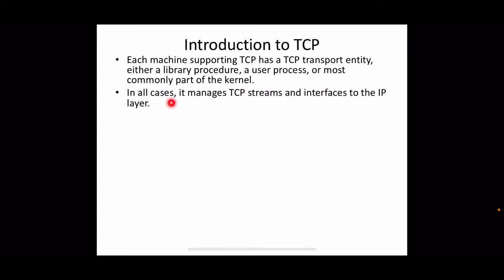The function of the transport entity is to manage TCP streams and interface to the IP layer. TCP treats data as a byte stream — a sequence of bytes, never a single logical data unit. That is why it assigns a sequence number to every byte, so each byte in the data stream is uniquely numbered.